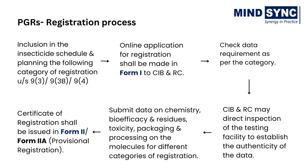CIBRC may direct preliminary scrutiny of the testing facility to establish the authenticity of the data. Generation and submission of chemistry, toxicity, packaging, and bioefficacy data must comply with the latest guidelines for different categories of registration. Upon satisfaction, the Registration Committee shall issue a Certificate of Registration in Form 2, or Form 2A for Provisional Registration. The license for manufacture, sale, and stock are dealt with by the state government, and approval by the concerned state government and issuance of a manufacturing license is required if the product is to be sold and distributed in India.